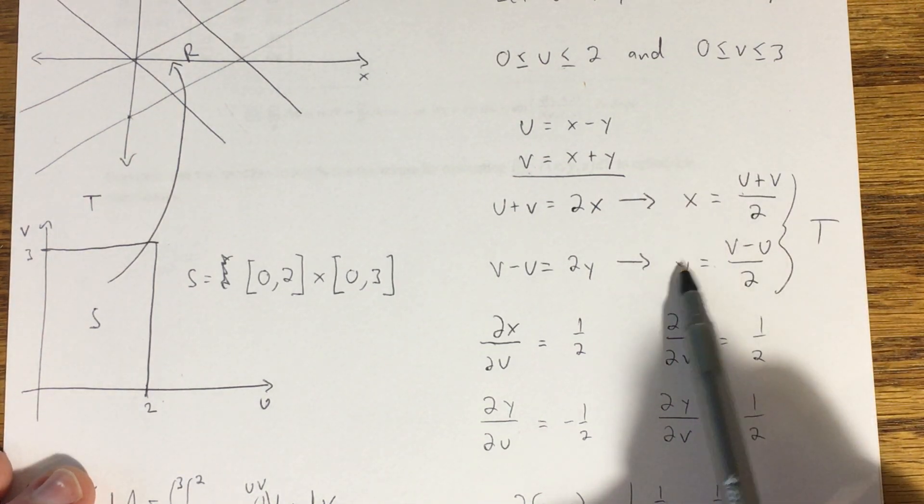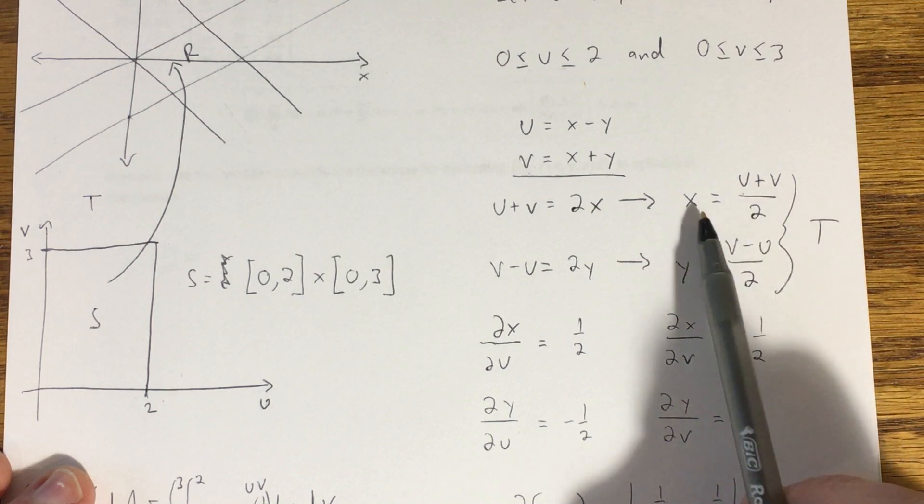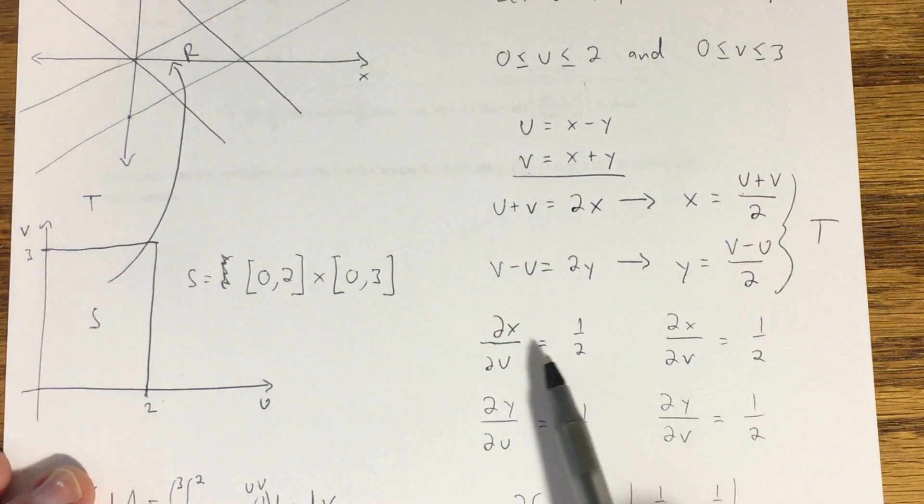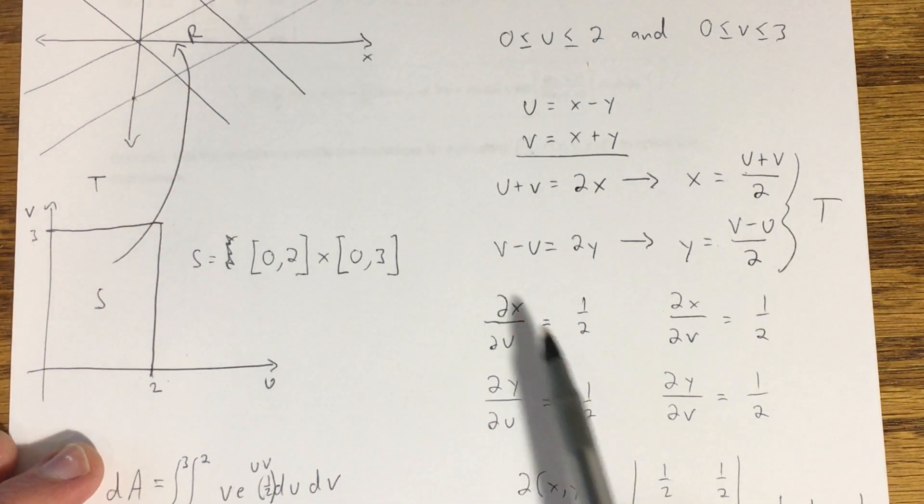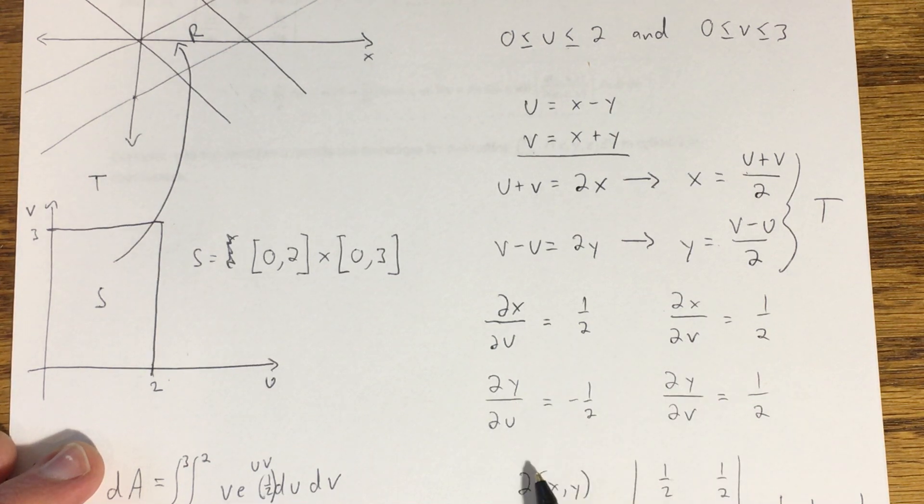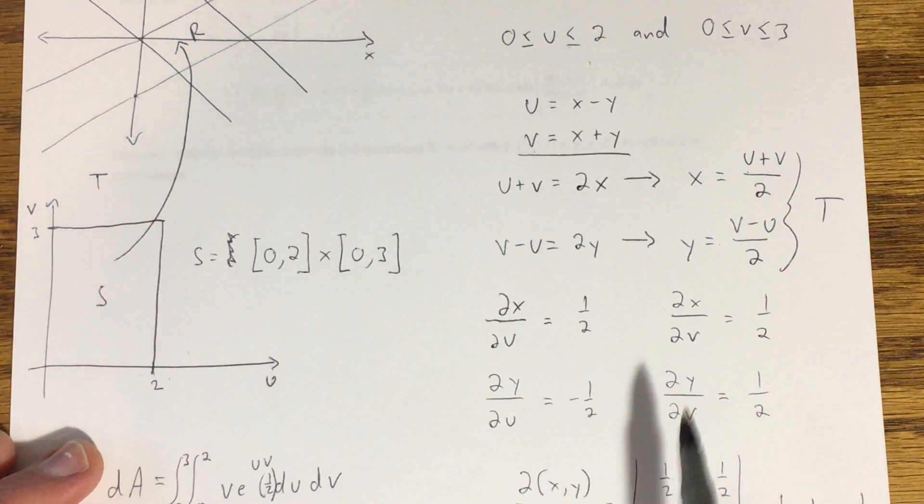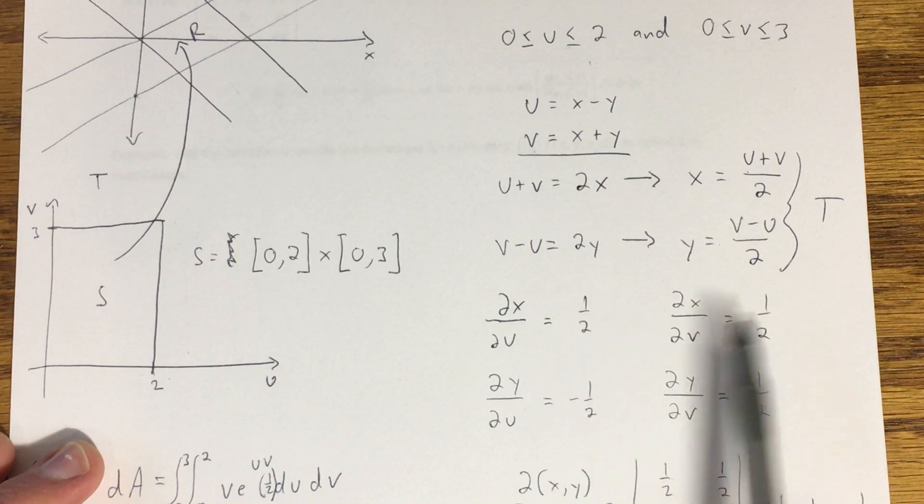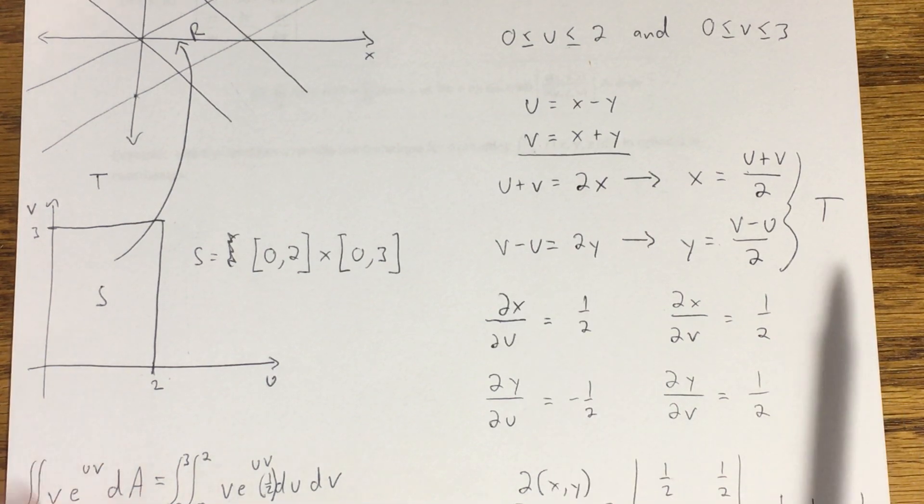So here we have X and Y in terms of U and V, functions of U and V. So we need their first order partials, partial of X with respect to both U and V, partial of Y with respect to both U and V. I did that here. Notice each of them are equal to 1 half except this one, which is negative 1 half.